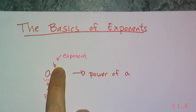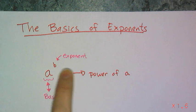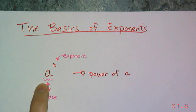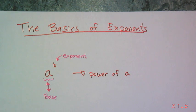A to the B power is called a power of A. A is the base and B is the exponent.